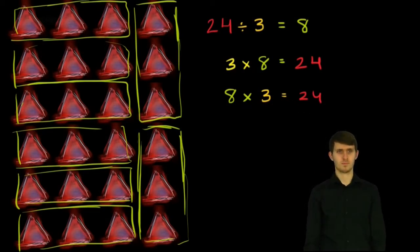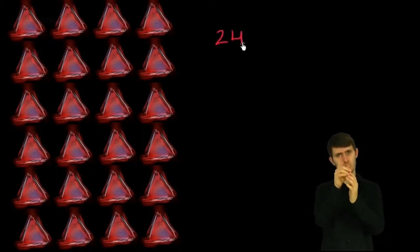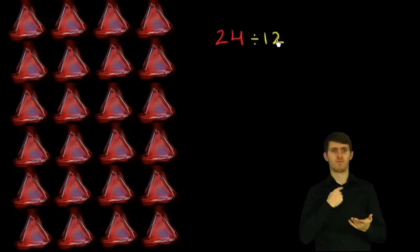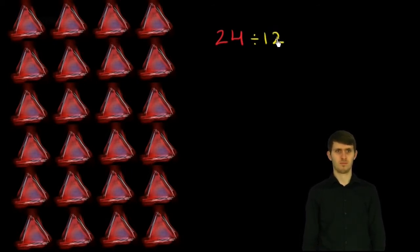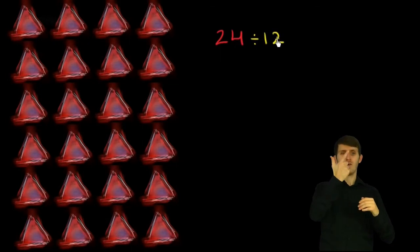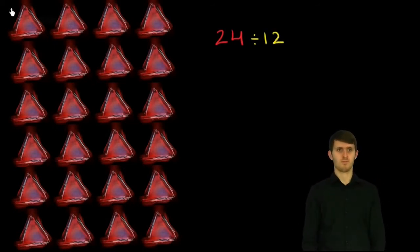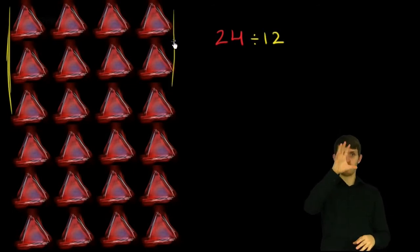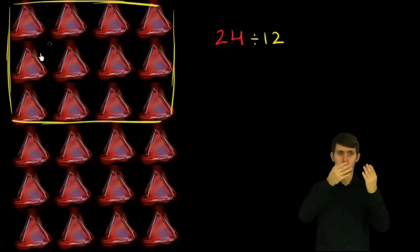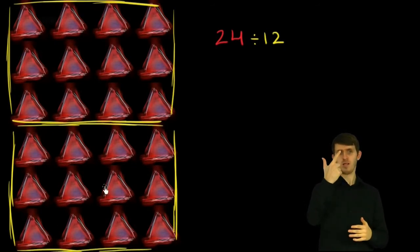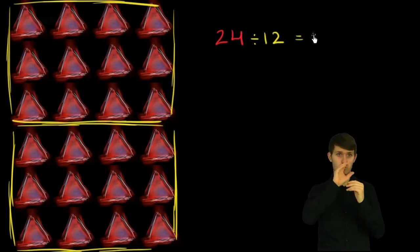Now let's make things more interesting. Based on what we just saw, what is 24 divided by 12? I encourage you to pause the video, draw out 24 triangles, and try to figure it out. One way to think about it: divide 24 into groups of 12 and think about how many groups you have. Here is one group of 12, and here is another group of 12. So we have two groups of 12 — 24 divided by 12 is 2.